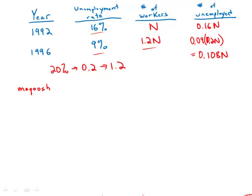So first of all, notice that this number is lower than this number. In other words, the total number of unemployed has decreased over this period. So right away, we can eliminate answer choices D and E, because we know we're dealing with a decrease, not an increase.